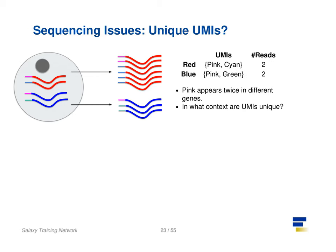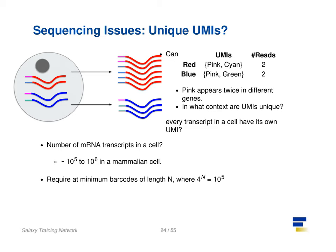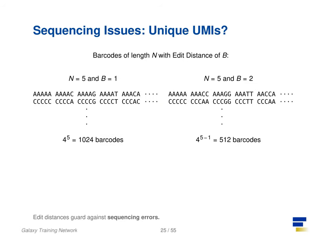UMIs are relatively random, but not truly random. Notice that the pink UMI appears twice, once in the blue transcript and once in the pink transcript. This is due to there being often more transcripts than available UMIs, both of which are dependent on the number of transcripts in a cell and the length of the barcode. Consider a set of barcodes of length five with an edit distance of one between adjacent barcodes, and another set with an edit distance of two. The former is not robust against common sequencing errors of one base pair, but the latter only allows for half the number of barcodes. This trade-off between the number of available barcodes and guarding against sequencing errors is instrumental in the design of cell barcodes and UMIs.